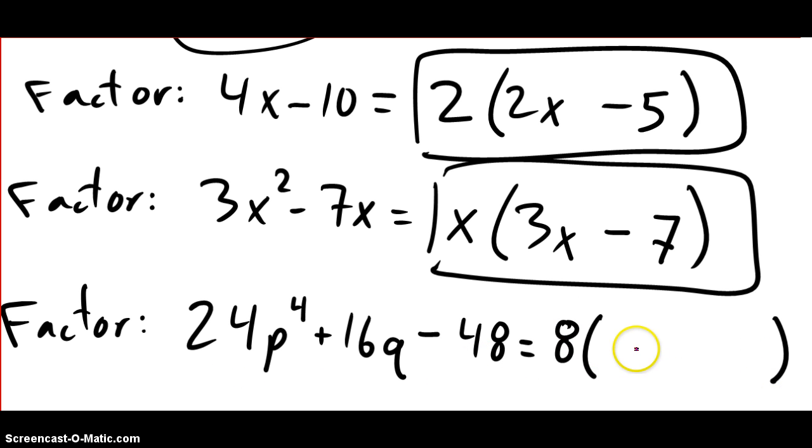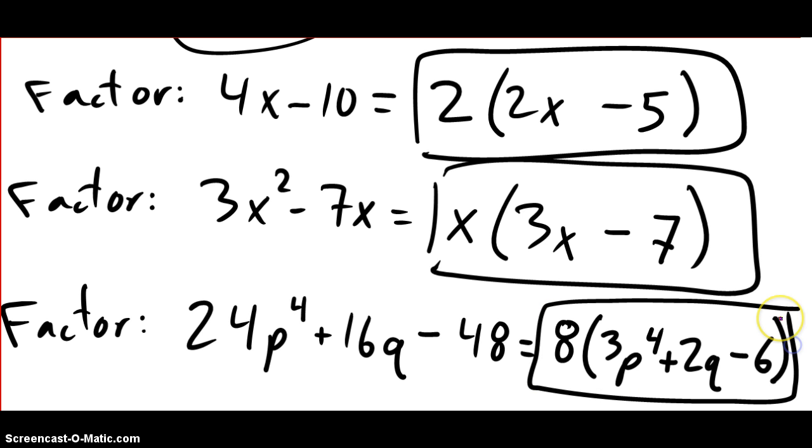8 times what is 24p to the 4th? In this case, 3p to the 4th. 8 times what is 16q, positive 16q, 2q. 8 times what is minus 48, minus 6. Again, you check it with the distributive property.